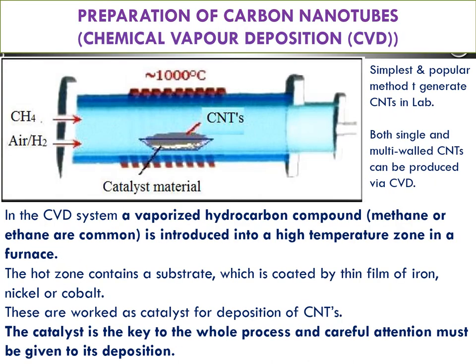The next method is the Chemical Vapor Deposition (CVD) method — this is the industrial method most frequently used to prepare carbon nanotubes. In this method, methane gas (CH4) along with hydrogen gas or air is passed into a chamber at 1000 degrees centigrade. The chamber contains a catalyst material made of cobalt or nickel. At this temperature, CH bonds break down, and the free evaporated carbon deposits on the catalyst metal as carbon nanotubes.